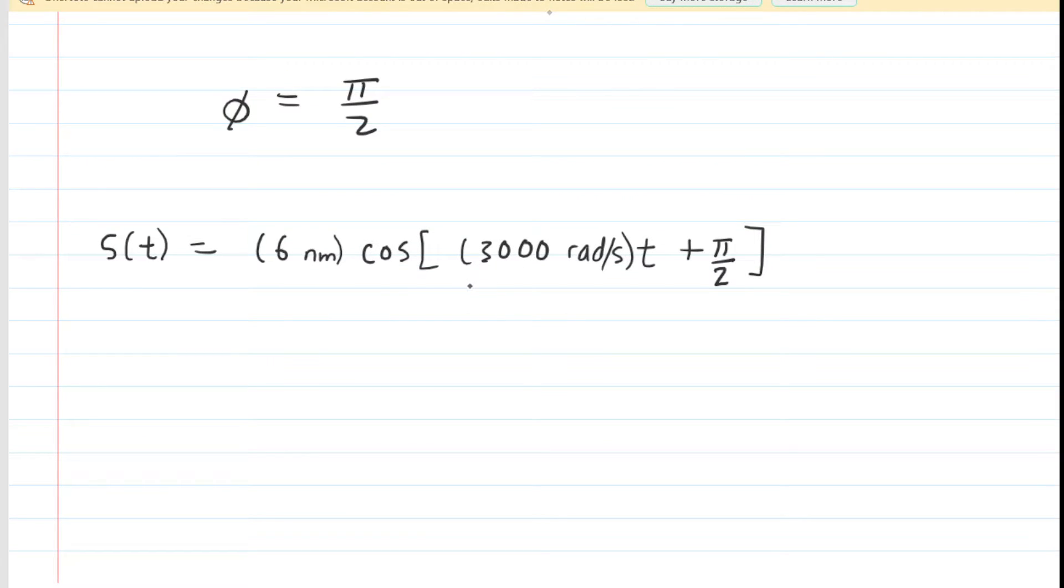But now we can rewrite the equation a little bit further, because we're going to be able to take advantage of a trigonometric identity. We don't need to do this, but it's just a little bit easier, perhaps. So we have the cosine of the 3,000t plus π over 2.